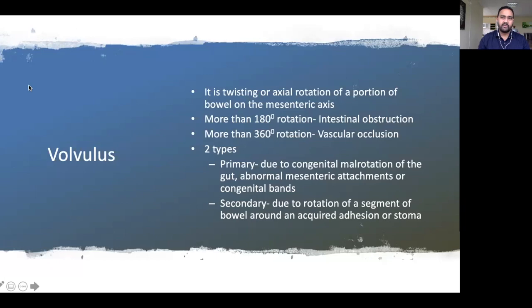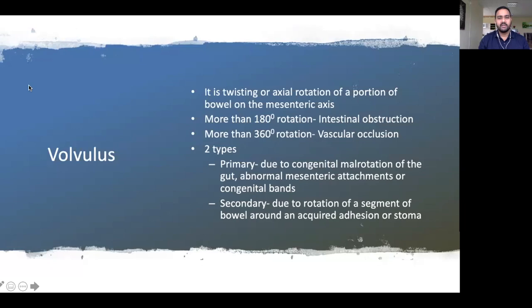Secondary volvulus is the commonest type. Primary volvulus is due to congenital bands or malrotation. Secondary volvulus occurs when the bowel rotates around acquired adhesions or a stoma. Important distinction: congenital adhesions causing volvulus = primary; acquired adhesions during lifetime = secondary. Volvulus around a surgically created stoma is also classified as secondary.